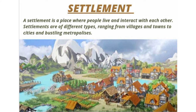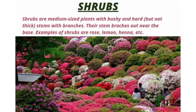Shrubs. Shrubs are medium-sized plants with bushy and hard but not thick stems, with branches that stem out near the base. Examples of shrubs are rose, lemon, henna, etc.